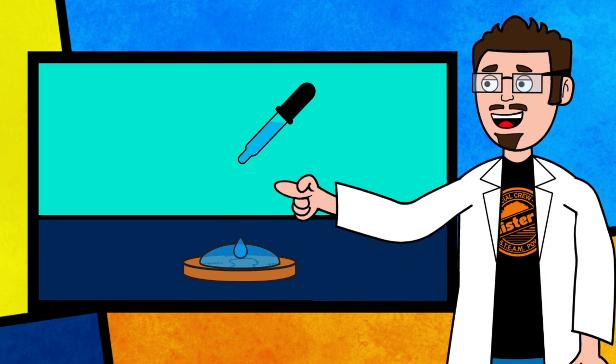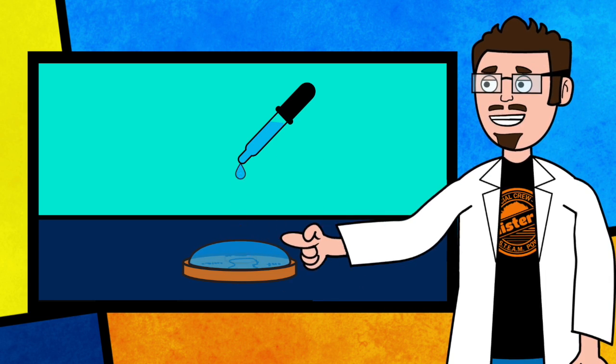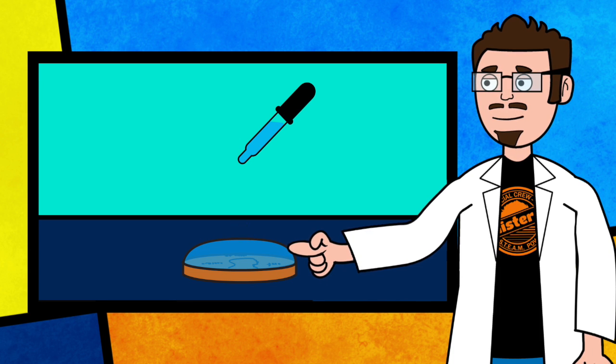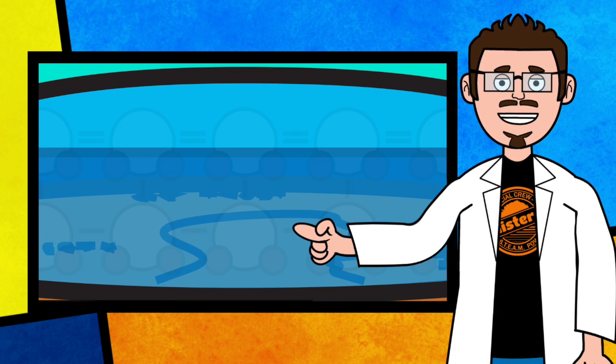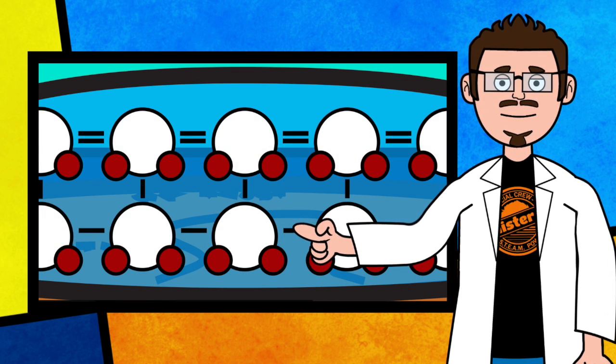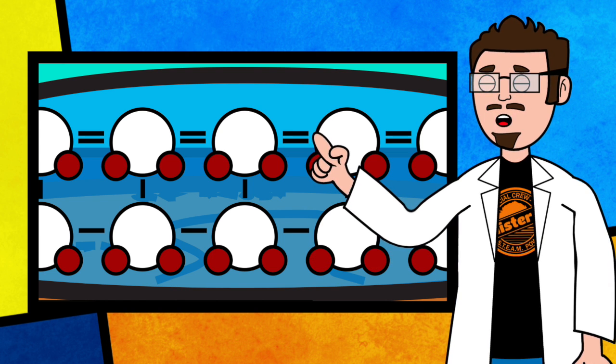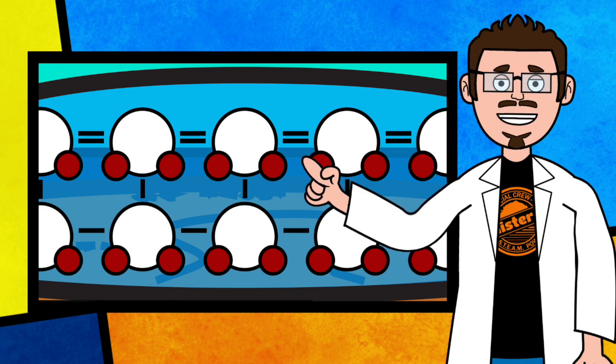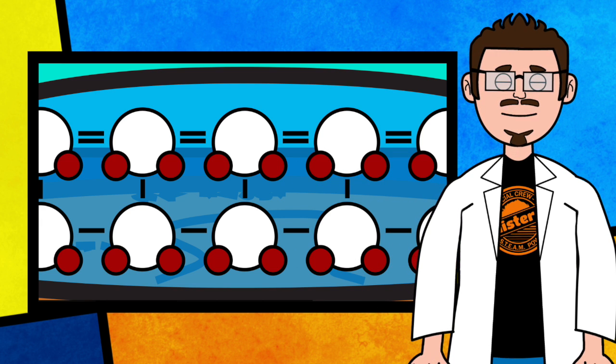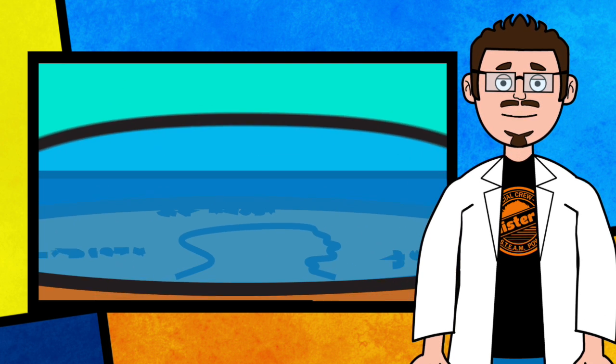As we drop more water on the penny, we start seeing a rounded shape at the surface. The molecules below the surface are attracted to one another and pull in all directions. However, the water molecules on the surface experience an inward pull because they don't have as many molecules to hang on to. This is what makes the surface of water so strong.